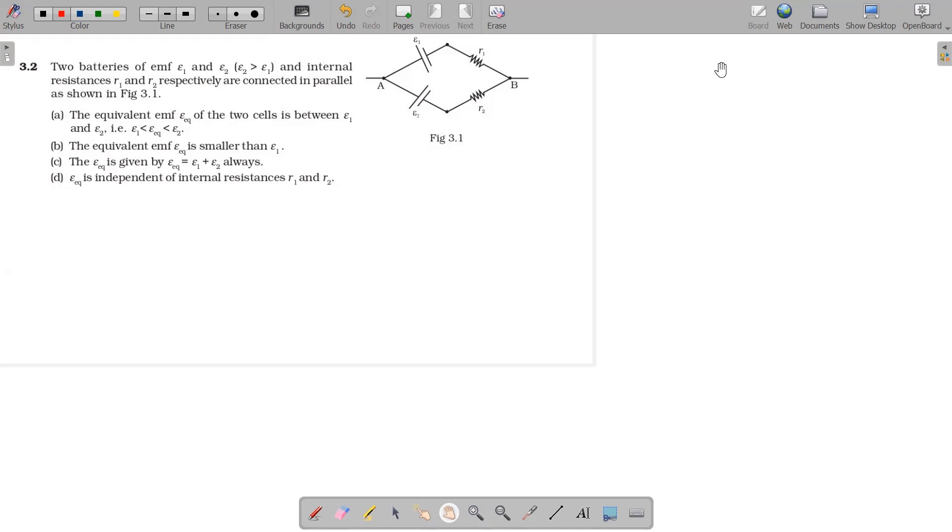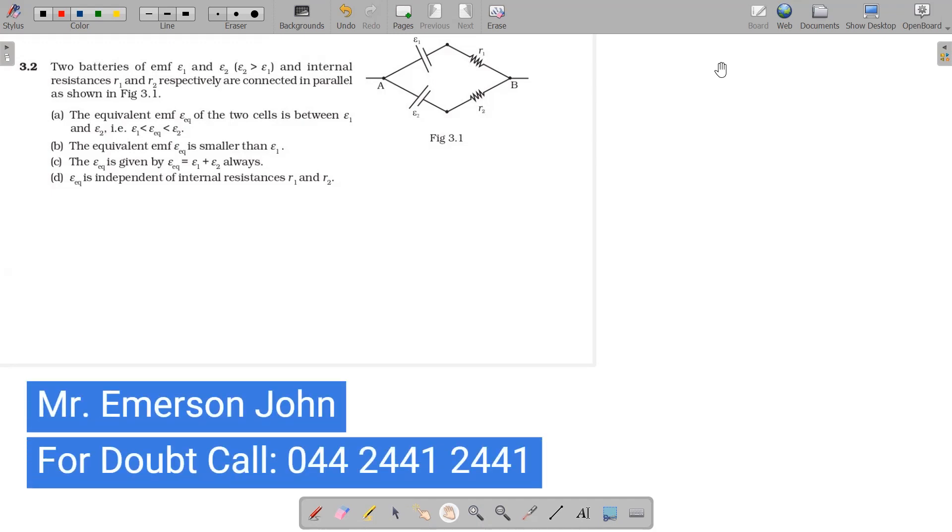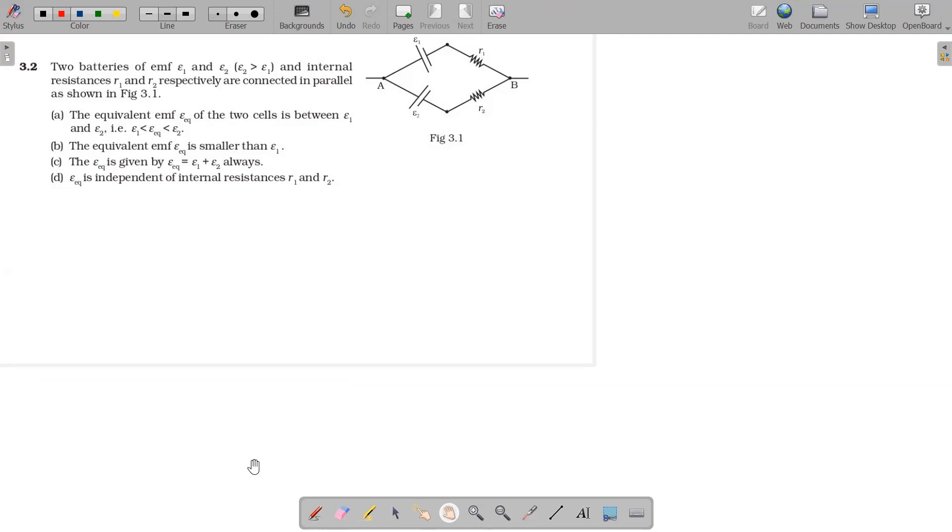Current electricity physics NCERT question layer exemplar, second question. Two batteries of EMF e1 and e2 (e2 is greater than e1) and internal resistance r1 and r2 respectively are connected in parallel to each other as shown in the diagram.